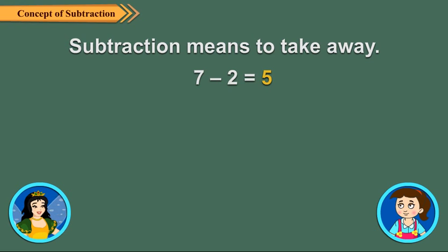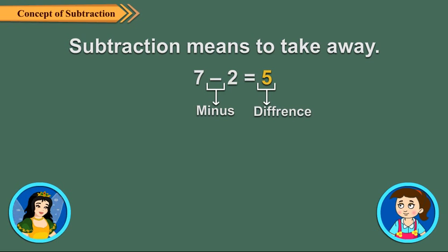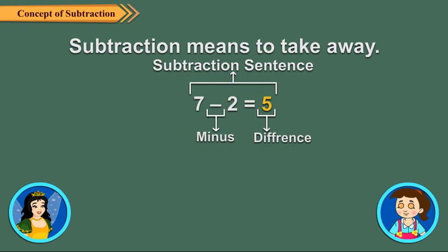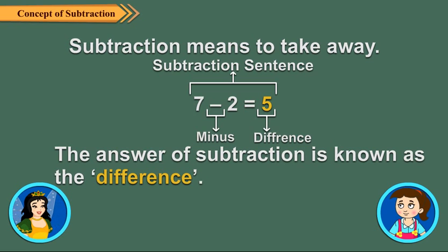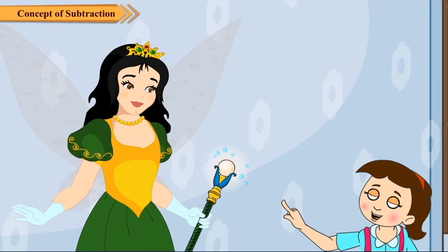The sign of subtraction is minus, and five is called the difference. Seven minus two is equal to five is a subtraction sentence, and is read as: seven minus two is equal to five. The answer of subtraction is known as the difference.